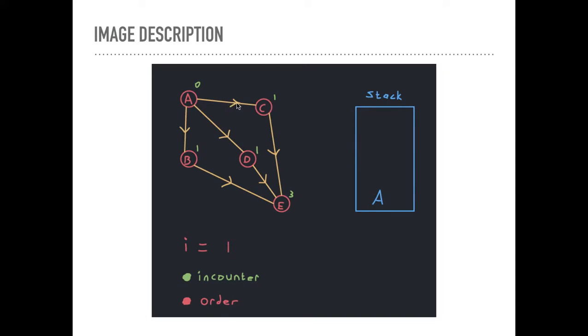C, it's 1. This is the only incoming edge. E is 3, 1, 2, 3 incoming edges, 1 and 1. You understand these are edges. This is the direction, these little arrows into the vertices.